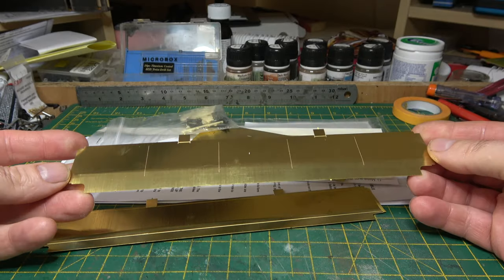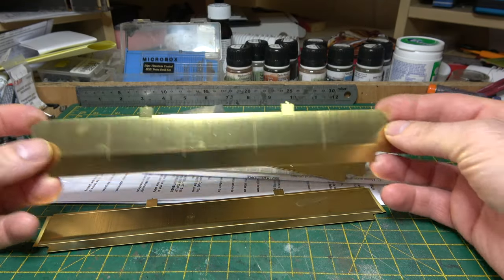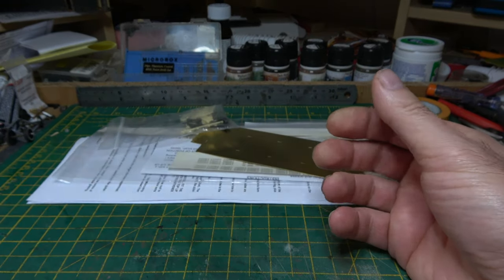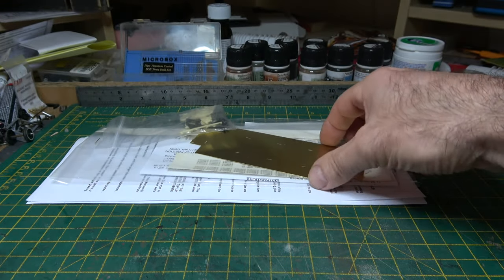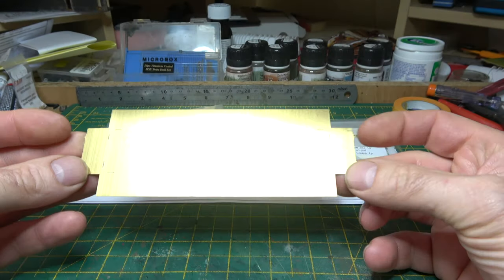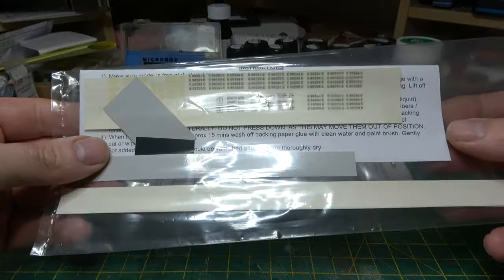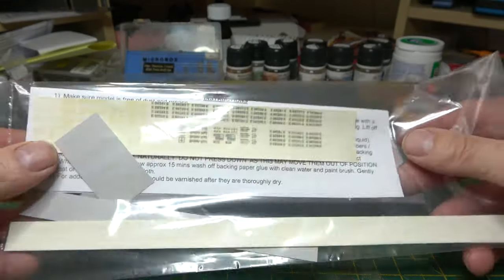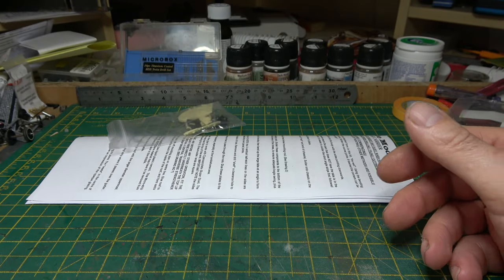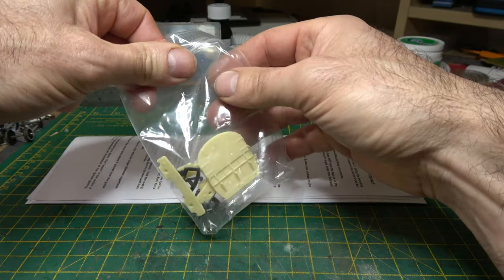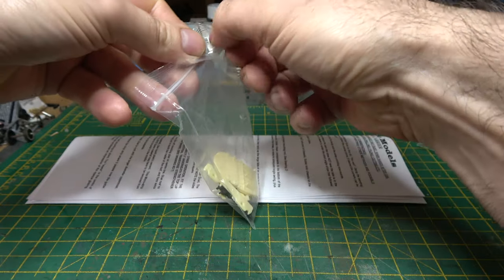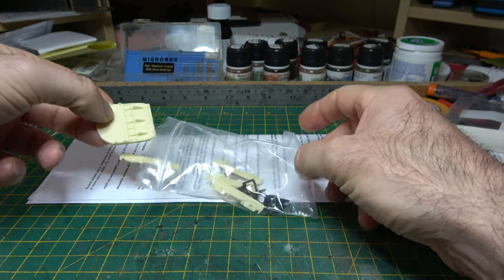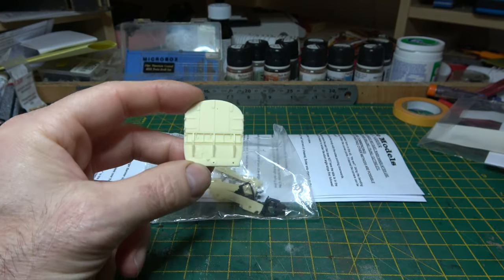Out of the box we've got the vacuum formed plastic roof, the brass sides, the car well, a plastic bag containing the transfers, some instructions and the ribbing strips.